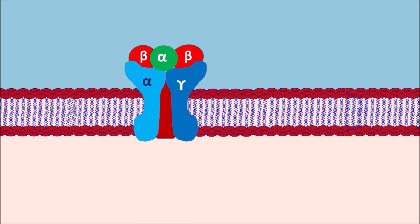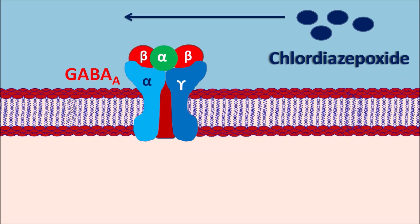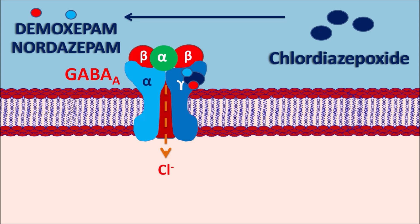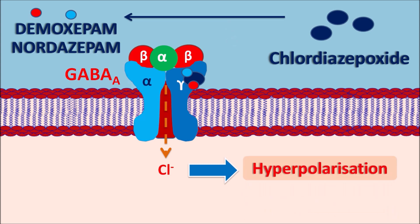Chlordiazepoxide mainly acts on the GABA-A receptors present at different centers within the CNS. The drug — or its metabolites Demoxepam or Nordazepam — can bind to the benzodiazepine binding site on GABA-A receptors, facilitating the action of GABA. This opens chloride channels, allowing chloride ions to enter the membrane and producing hyperpolarization, which prevents depolarization and excitation of the postsynaptic membrane. This inhibitory response results in decreased anxiety and increased sedation and sleep, producing anxiolytic, sedative, and hypnotic activity.